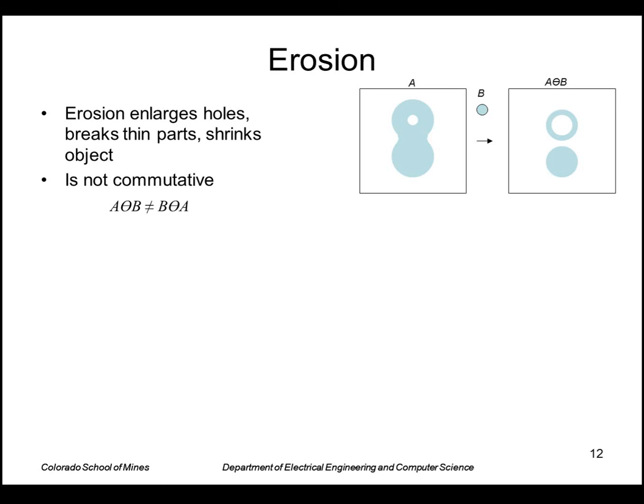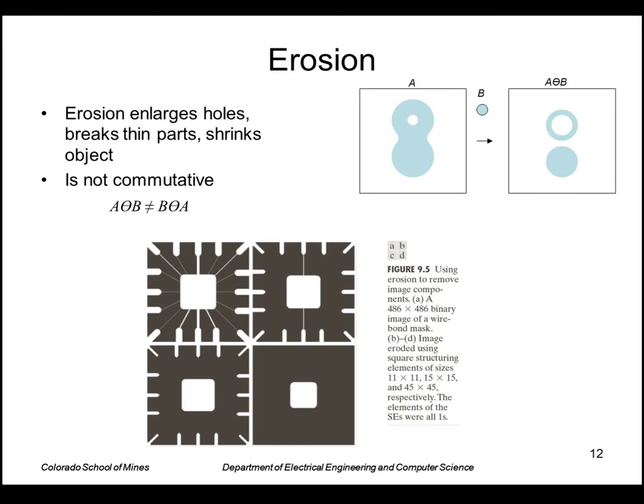So in general, we can think of erosion as shrinking a region. It makes a region smaller, it makes holes bigger, and it makes any thin parts go away. It's not commutative. Here's an example on an image. Here's my original image. Here is the result of eroding by a structuring element of size 11 by 11. These thin lines are smaller than 11 by 11, so they disappear, and everything else shrinks. Using a larger structuring element, I even get rid of the thick lines. And even larger structuring element, I get rid of all this stuff on the outside. So it destroys anything smaller than the structuring element.